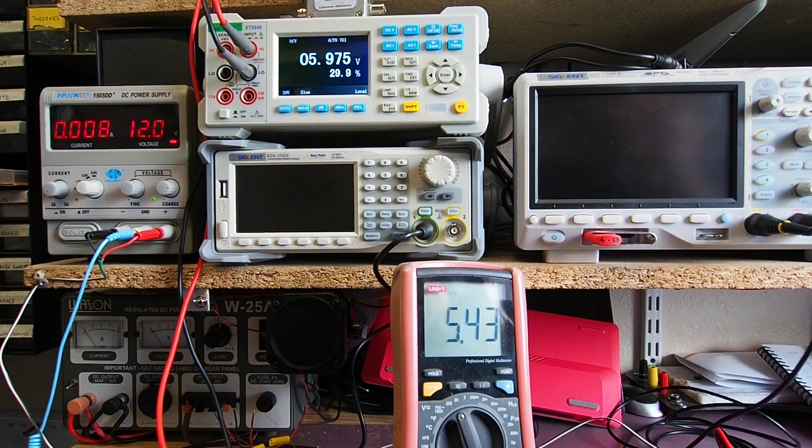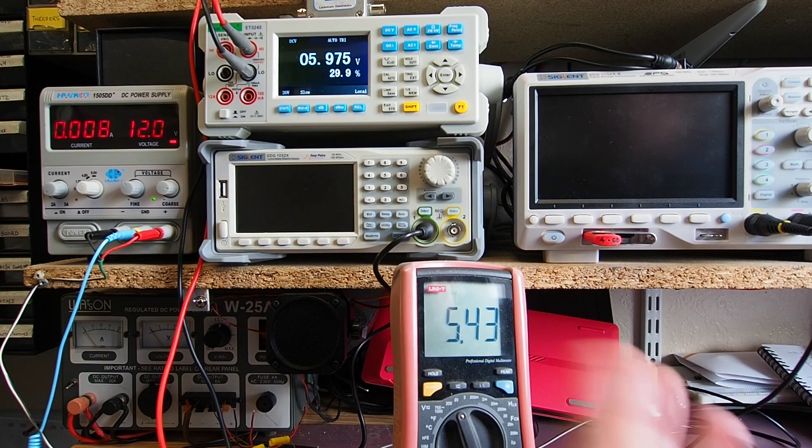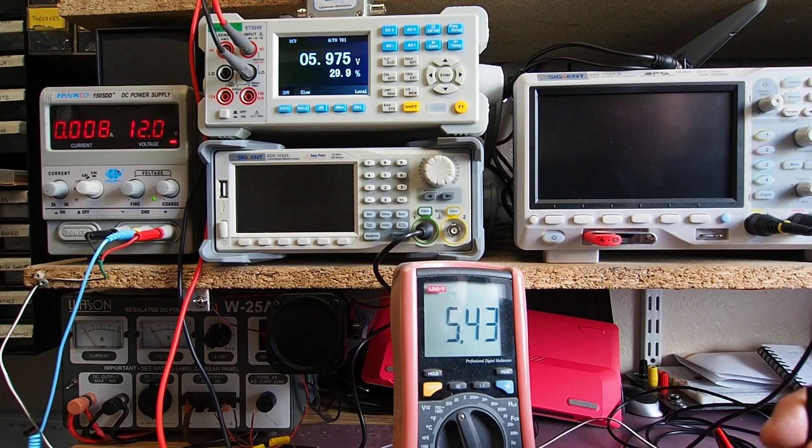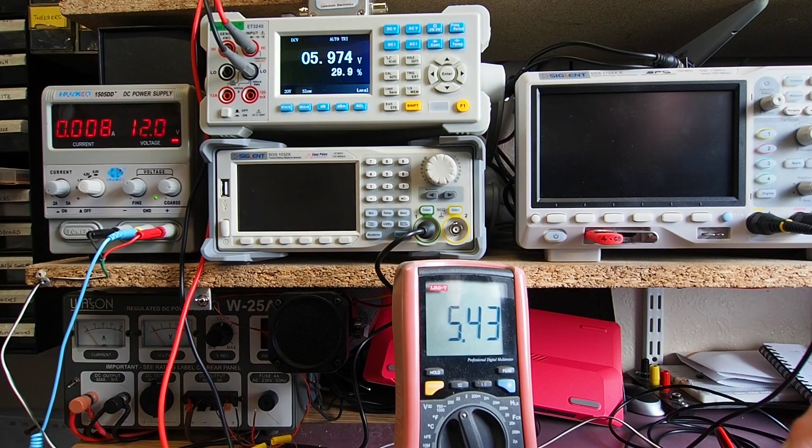You may recall I said on the first slide that the amplification is the difference between the two, and the difference between the two is about half the supply voltage, which is why you're getting something approximating to about six volts. So if I continue to reduce the voltage...